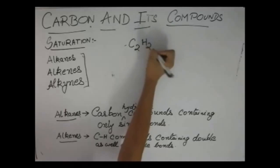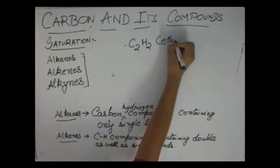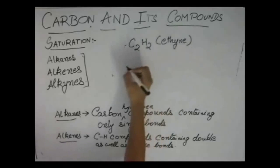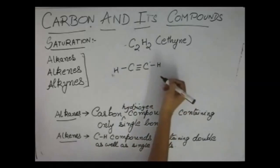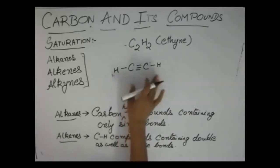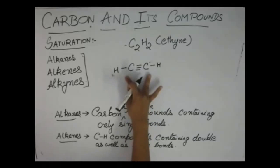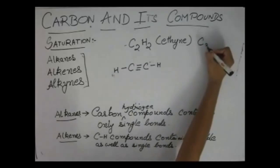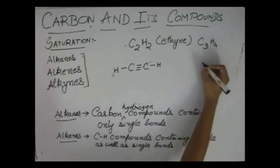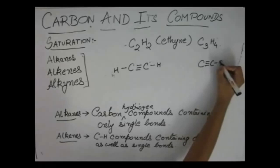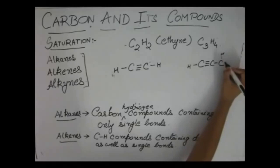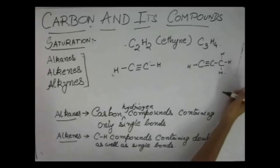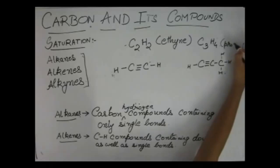We also drew the structure of C2H2, which is ethyne, with a triple bond between two carbon atoms and one hydrogen on each. The compound C3H4 similarly has a triple bond, with its four valencies satisfied — this is propyne.